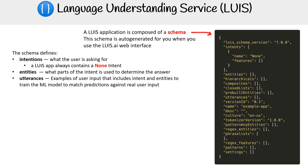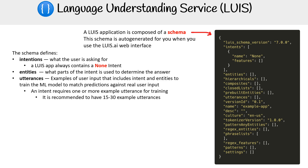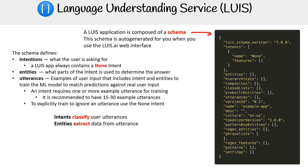You also have utterances — examples of the user input that include intent and entities to train the ML model to match predictions against real user input. An intent requires one or more example utterances for training, and it is recommended to have 15 to 30 example utterances. To explicitly train the model to ignore an utterance, you use the none intent. Intent classifies user utterances and entities extract data from utterances.